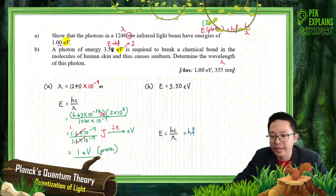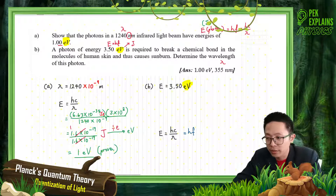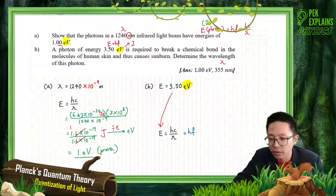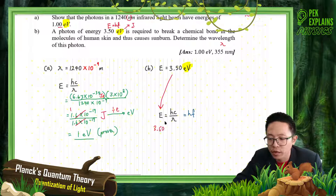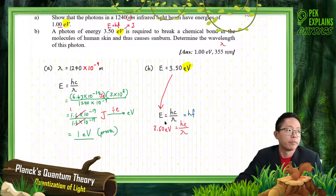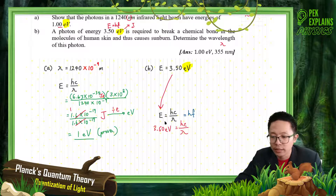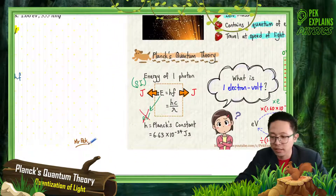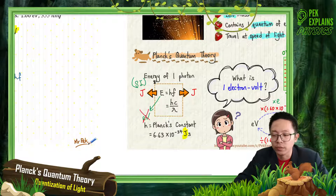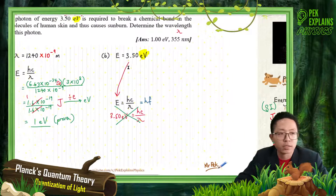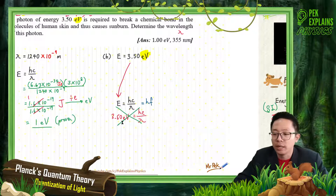We already have the energy of the photon, but the problem is the unit is in electron volts. You cannot straight away substitute into the formula. If you write 3.5 electron volts = hc over lambda - that is wrong. You cannot substitute electron volts into this formula, because this formula uses Joules. Even the unit for Planck's constant is Joule seconds. So the energy here must be in Joules - it cannot be electron volts. Please write it down: this is wrong.